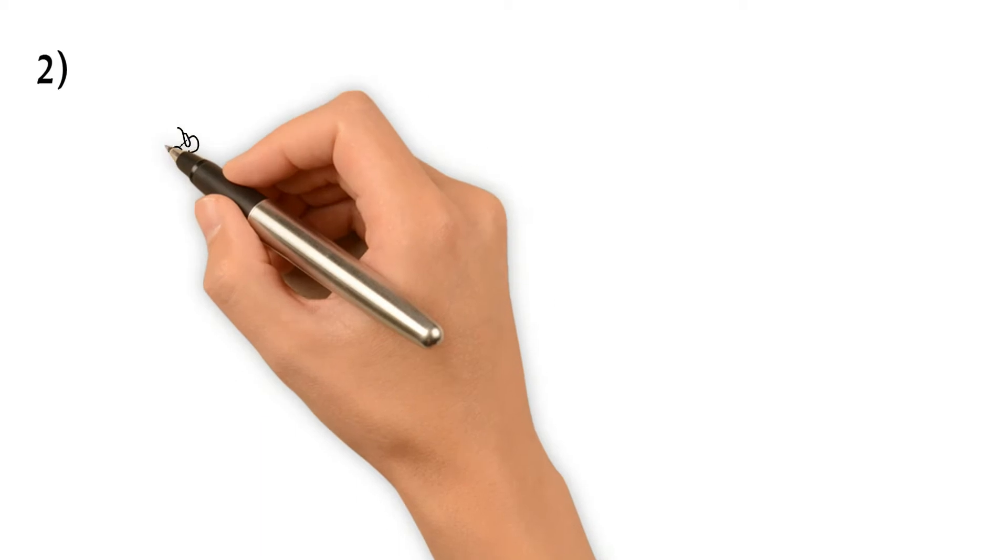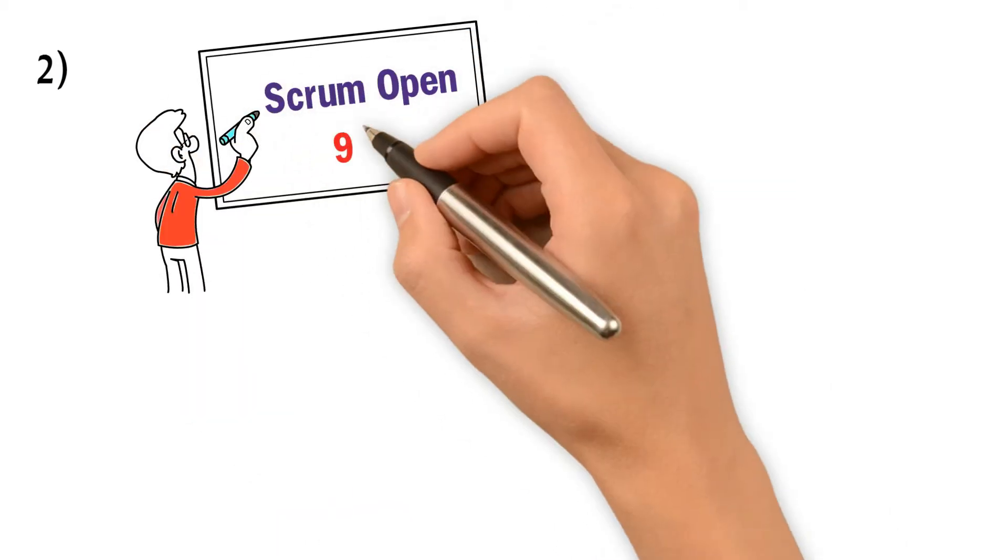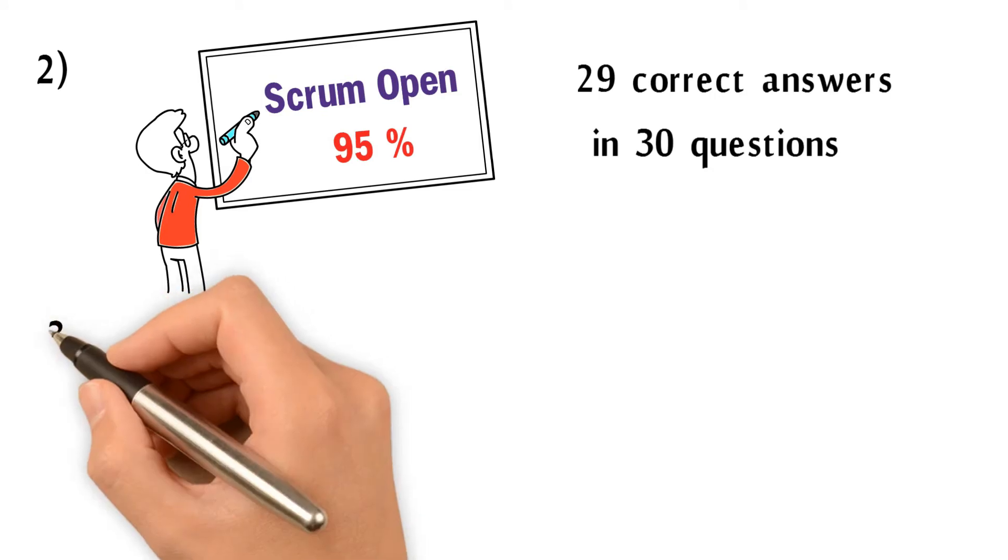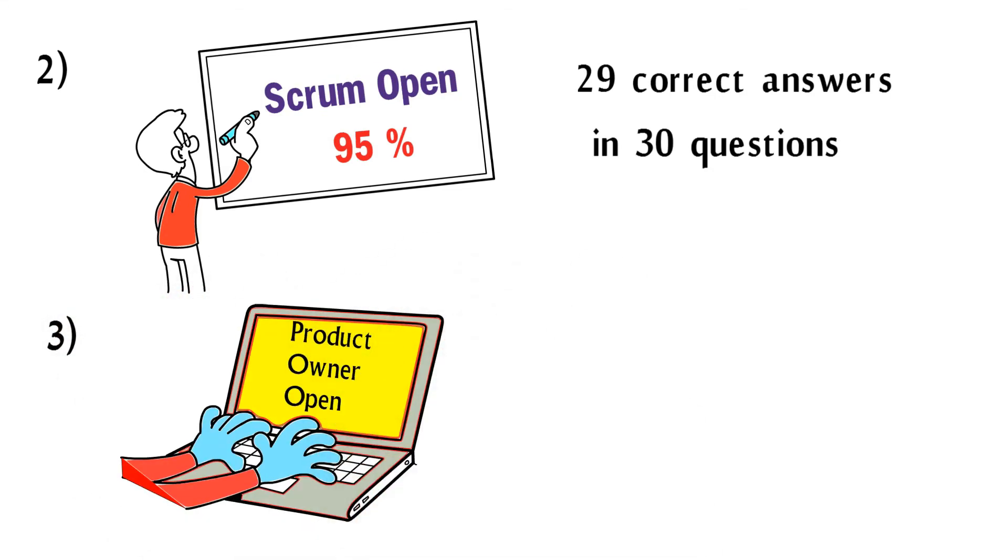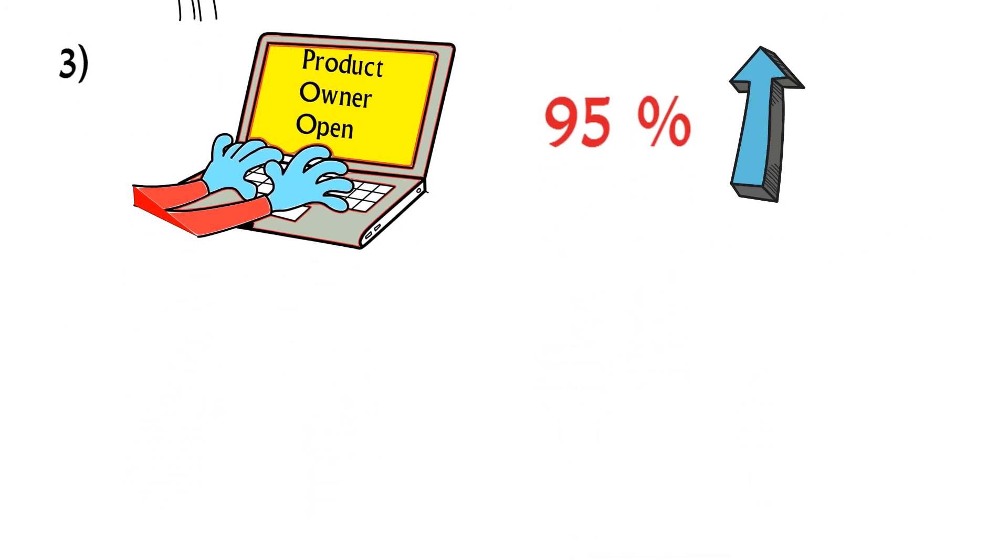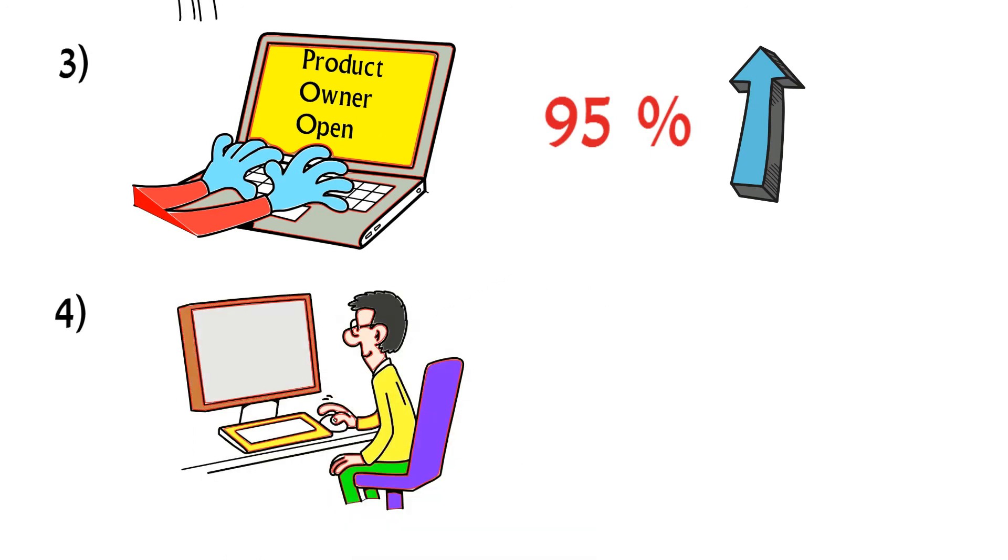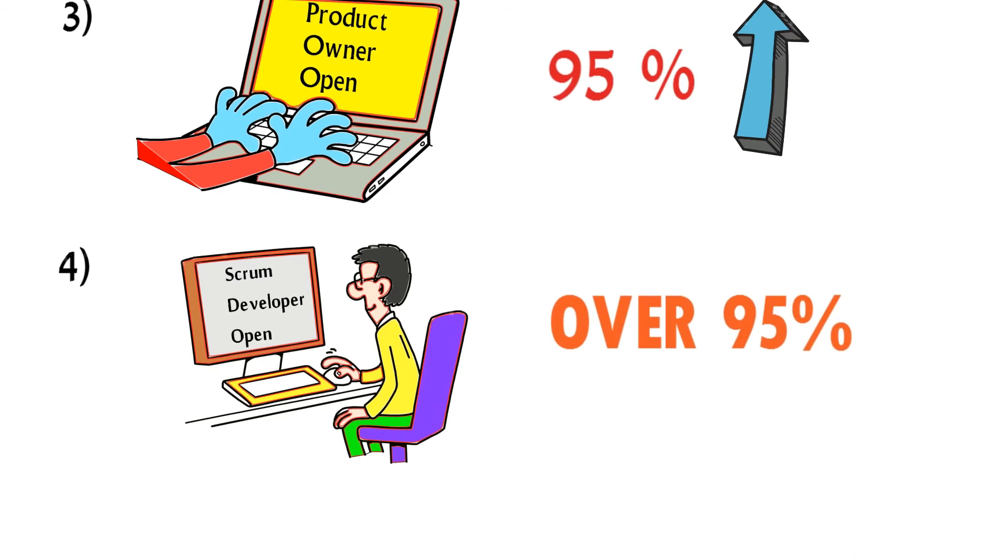Two, practice the Scrum Open in open assessments until score at least 95%. Three, practice Product Owner Open in open assessments until score over 95%. Four, practice the Scrum Developer Open in open assessments until score over 95%.